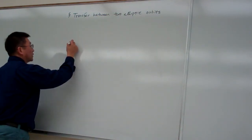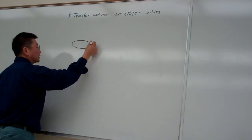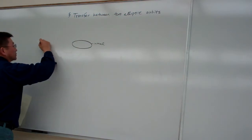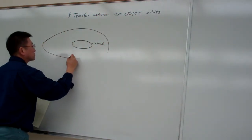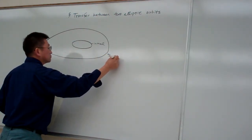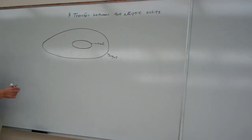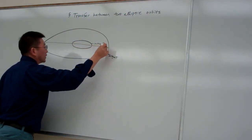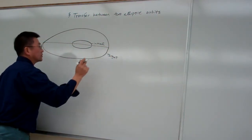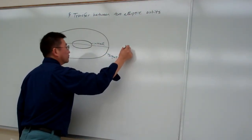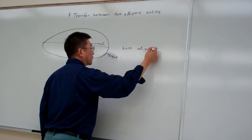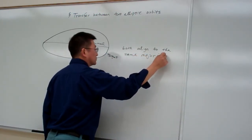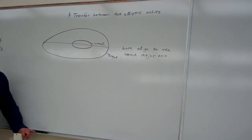Today we're going to be more general. Say if our initial orbit is elliptic and our target orbit is also elliptic. In this section we assume that they share the same major axis — so they both align to the same major axis. Gradually we will expand and release those assumptions.